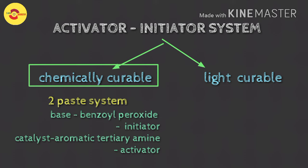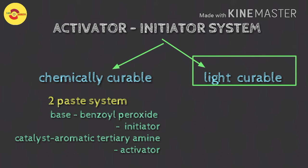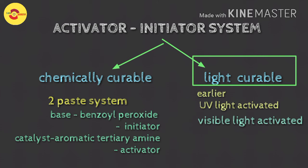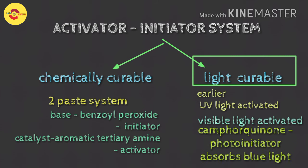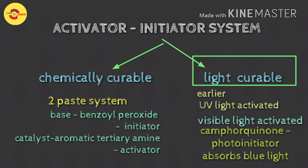Photo-chemically activated light-cure resins were earlier formulated for UV light to initiate free radicals. Today, UV light-cured composites have been replaced by visible blue light activated systems. Camphorquinone is a commonly used photosensitizer that absorbs blue light with wavelengths between 400 to 500 nanometers.